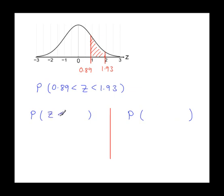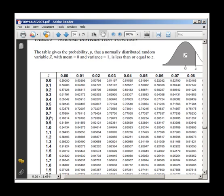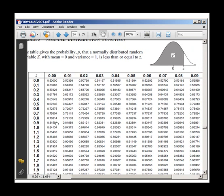Work out the probability that z is less than for both. And the numbers that go in the brackets, well, it's the 0.89 and 1.93. But it's always less than for both. Look up the probabilities from the tables.